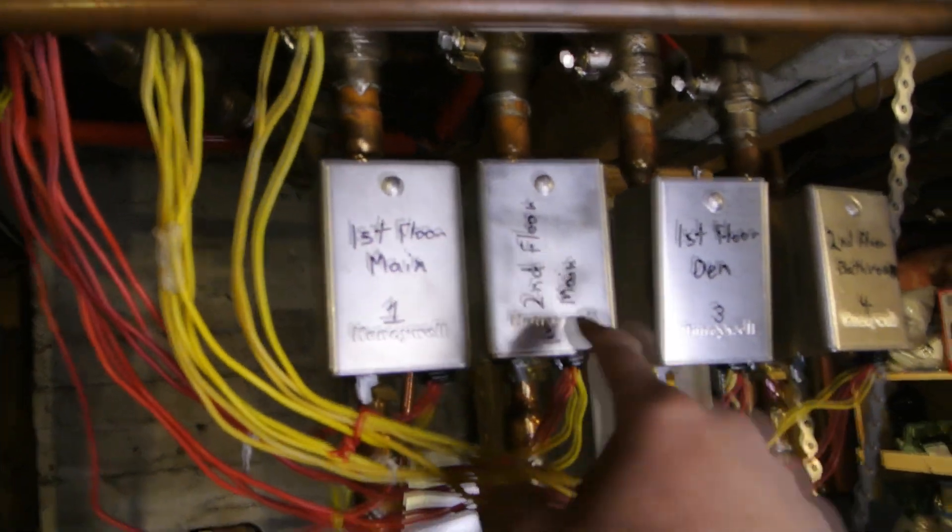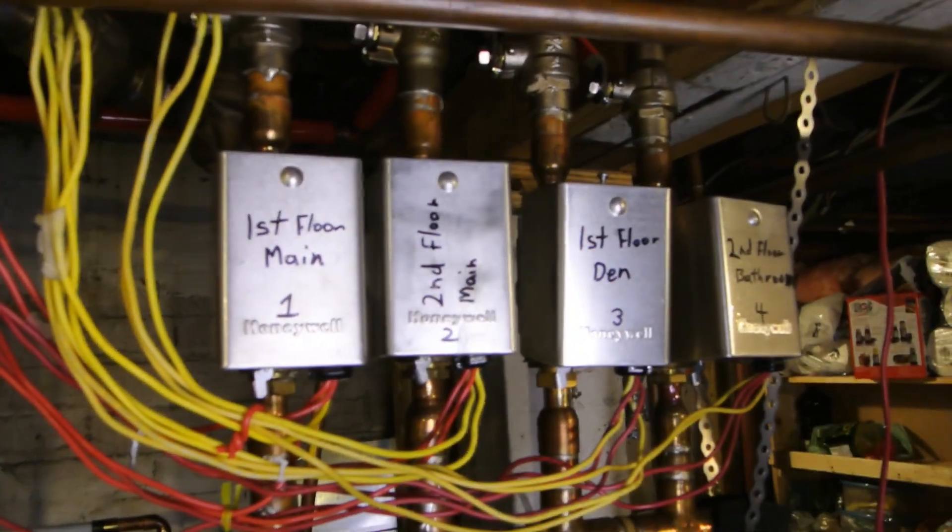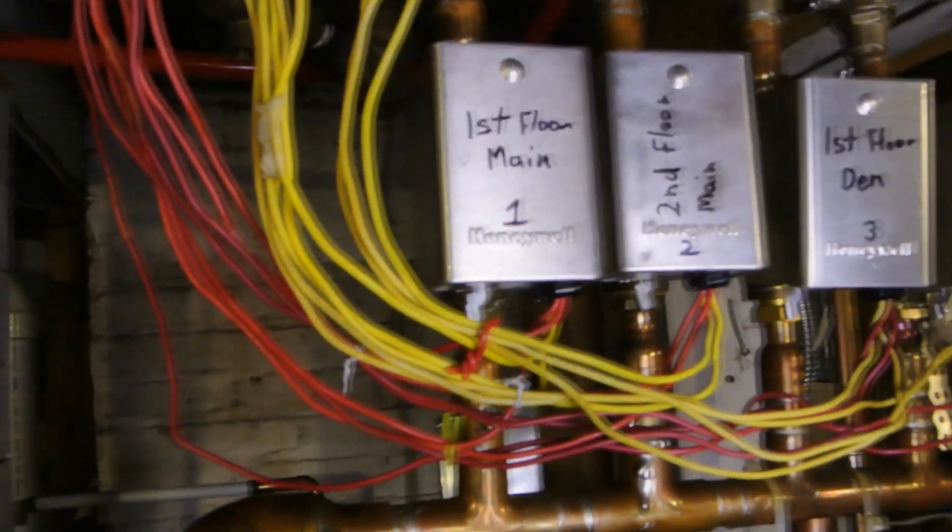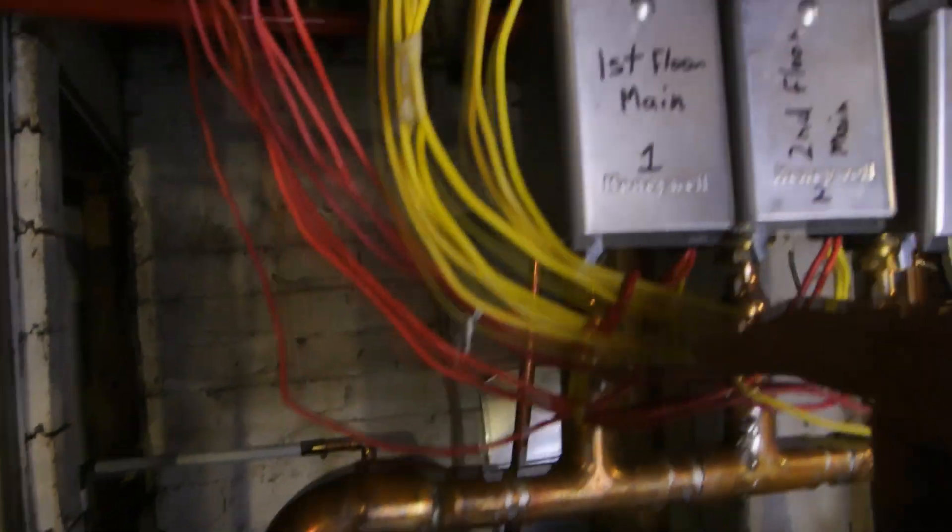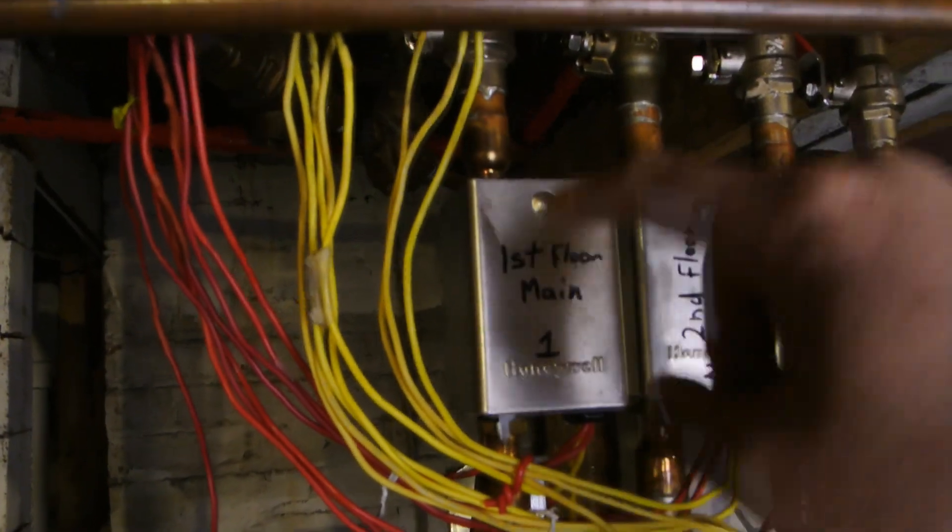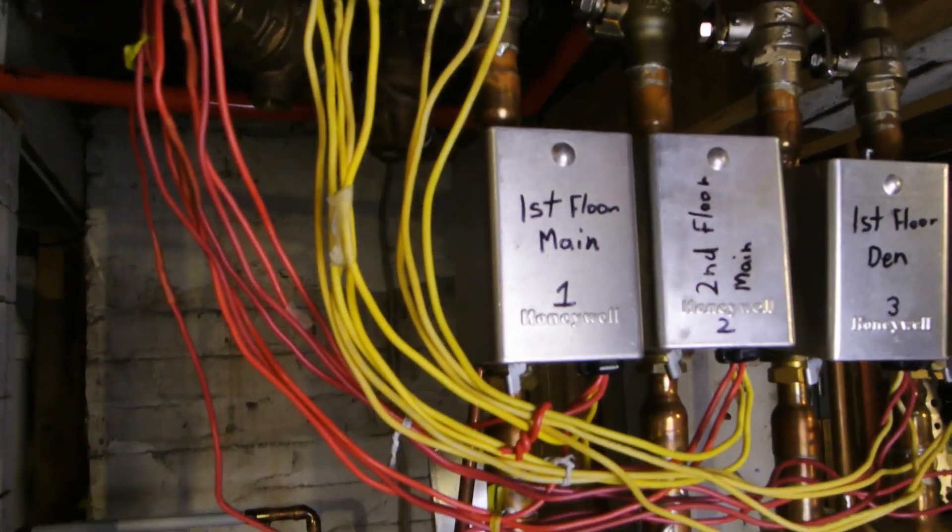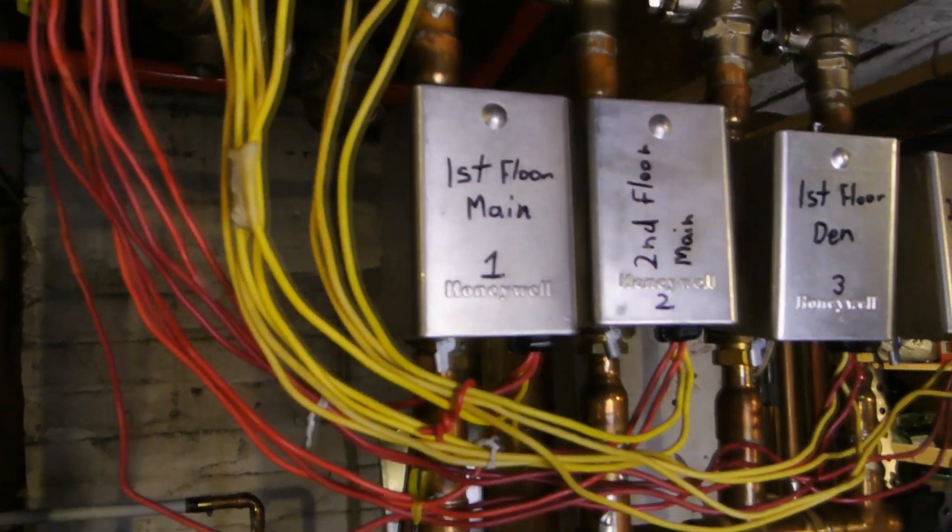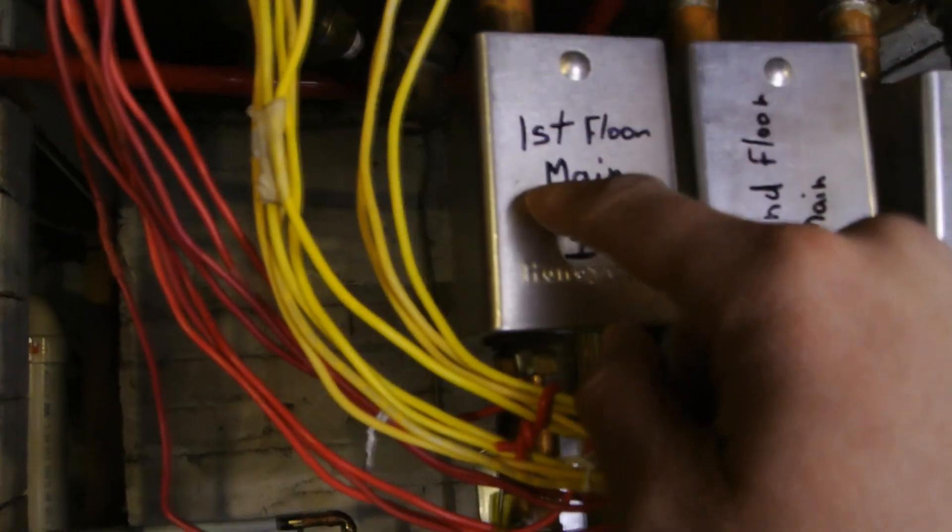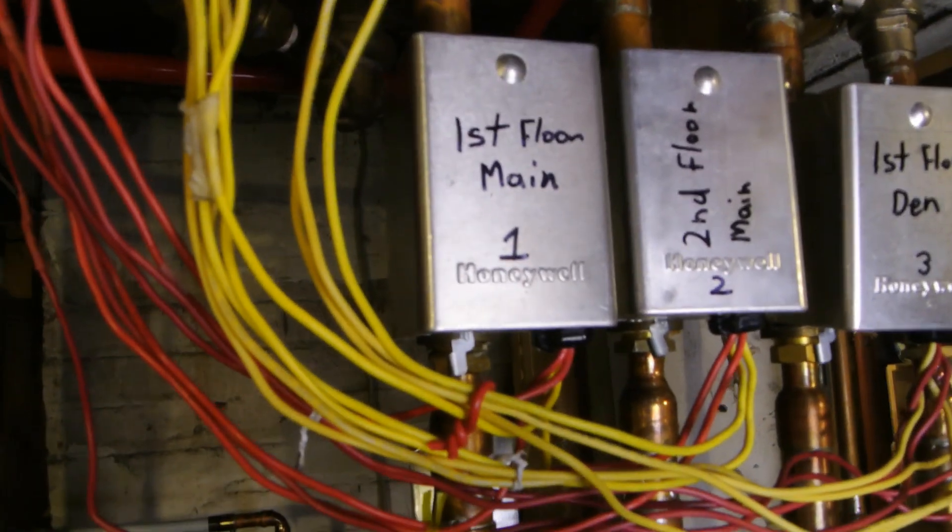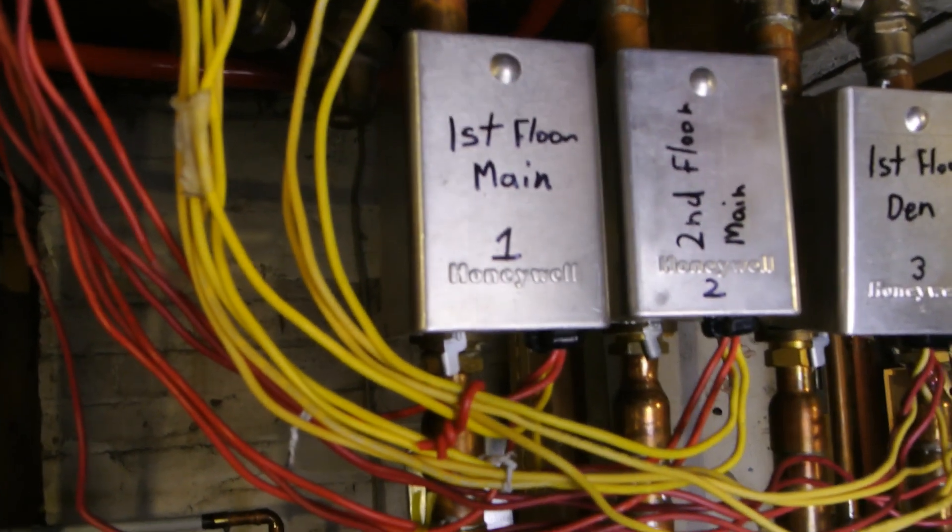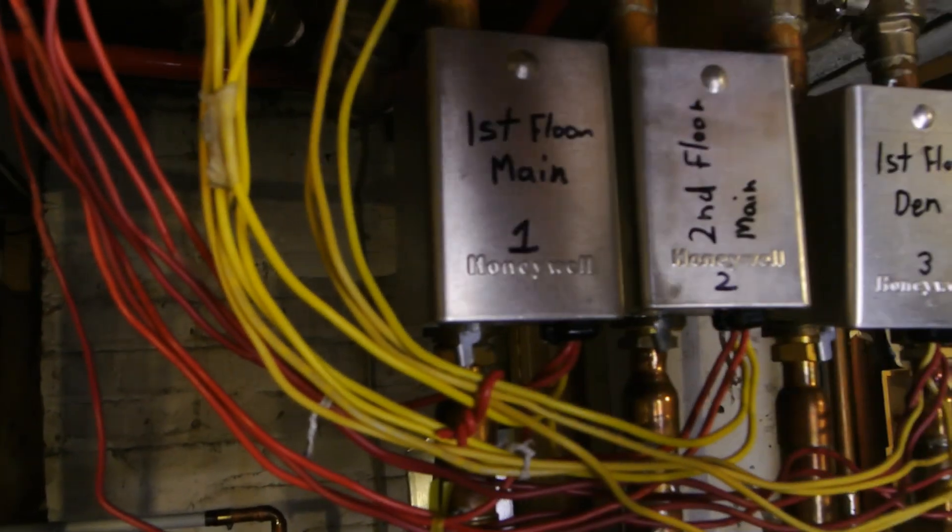You can see mine has main, second floor, the den, the bathroom - so I have four zones. Hot water flows from the boiler through the valve if it's open and circulates around the house, then back to the boiler and gets reheated. That's the cycle of heating. Real simple: when you turn on the thermostat, it completes a circuit and turns on the valve, which then allows hot water to circulate through.